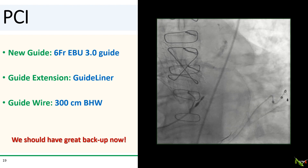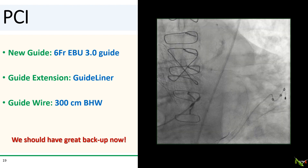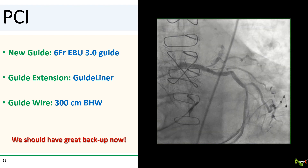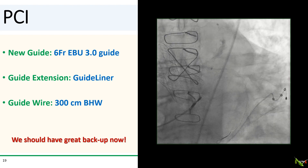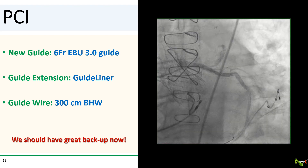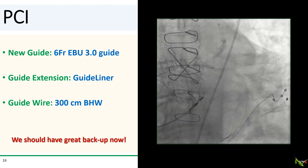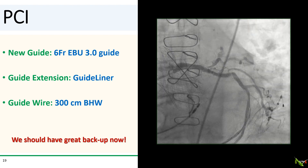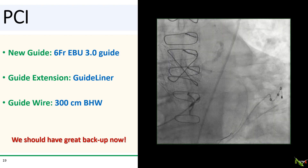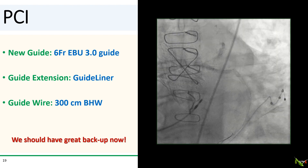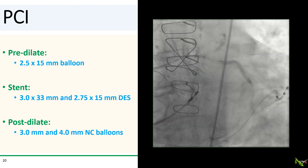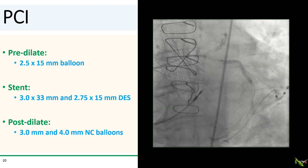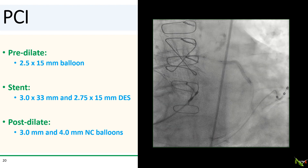We were able to successfully exchange our AL1 diagnostic catheter to a proper 6 French EBU 3.0 guide catheter, and then we inserted a guideliner to further stabilize our engagement. With good backup, the rest of the PCI became actually quite straightforward.